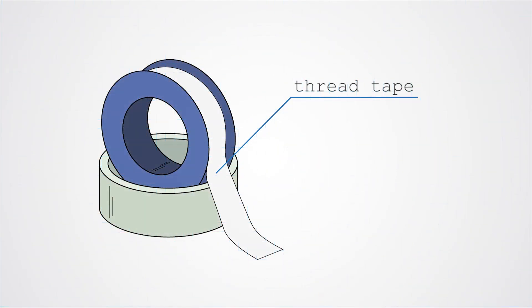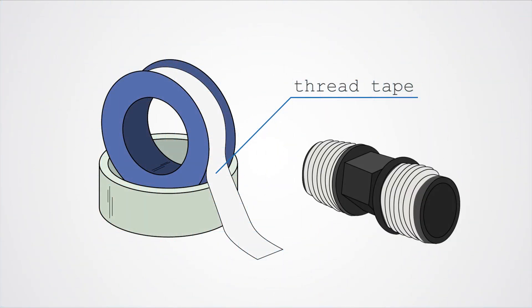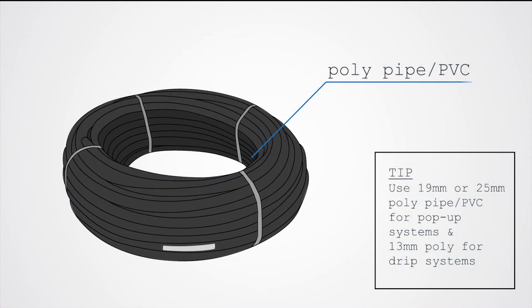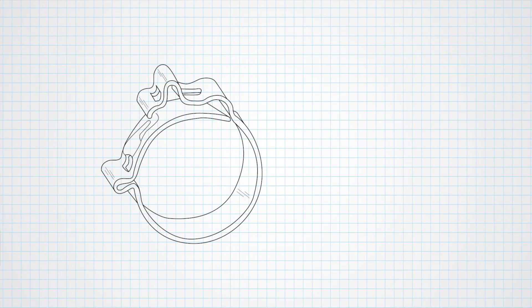To make it extra watertight, use thread tape around the connection. To connect it all to your system, use poly pipe and secure.